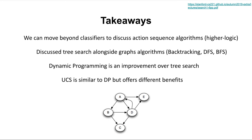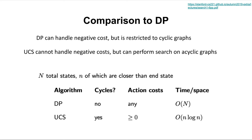Some takeaways from today: we can move beyond classifiers to discuss action sequence algorithms. We can turn a problem into a graph, and a machine can look for the most efficient way to solve it. We started with tree search — backtracking, recursive backtracking, DFS, BFS. We talked about dynamic programming and how it avoids exponential time. We covered the benefits of UCS and DP: UCS cannot handle negative costs; dynamic programming can handle negative costs but is restricted to acyclic graphs; UCS can perform search on cyclic graphs. It really depends on the problem.